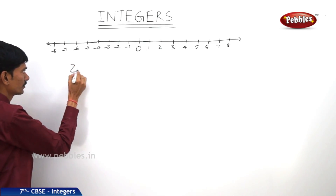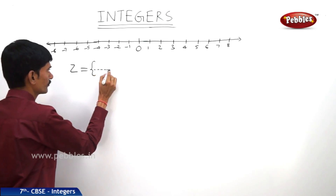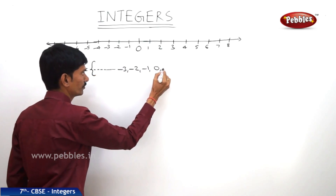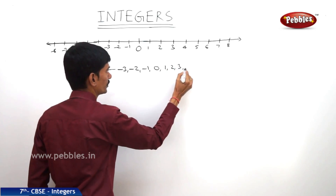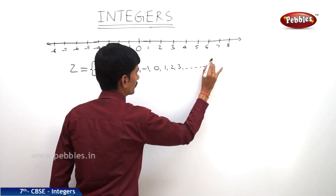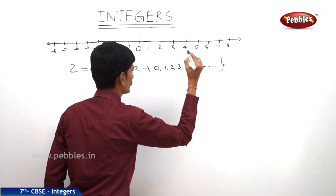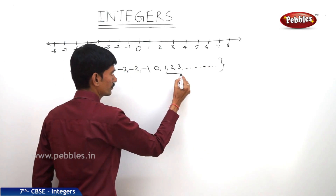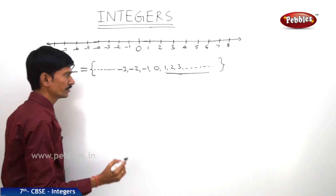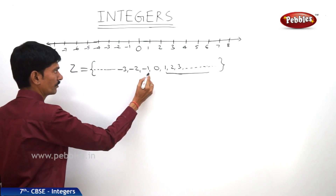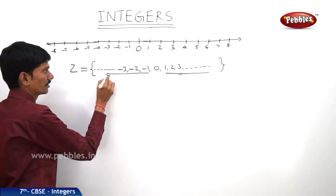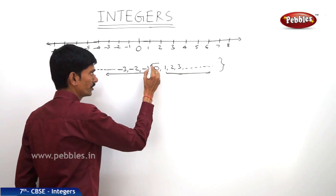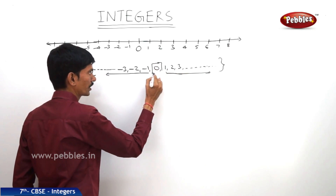So we can write Z = {..., minus 3, minus 2, minus 1, 0, 1, 2, 3, and so on}. Here 1, 2, 3 are all positive integers, and minus 1, minus 2, minus 3 are negative integers. Zero is neither positive nor negative.